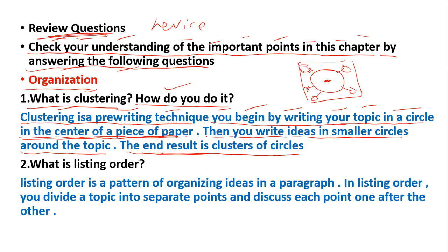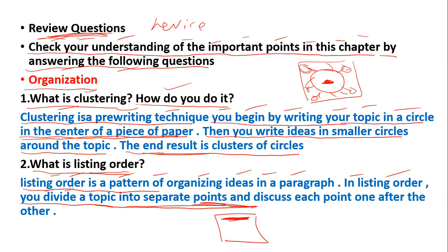What is listing order? Listing order is a pattern for organizing ideas in a paragraph. In listing order, you divide the topic into separate points. For example, sports.